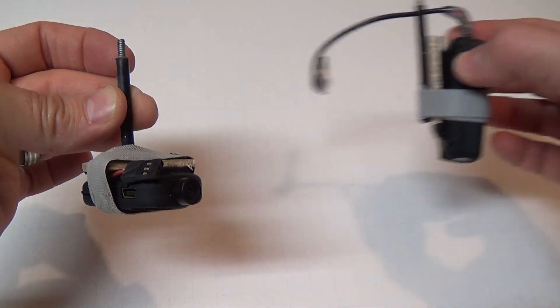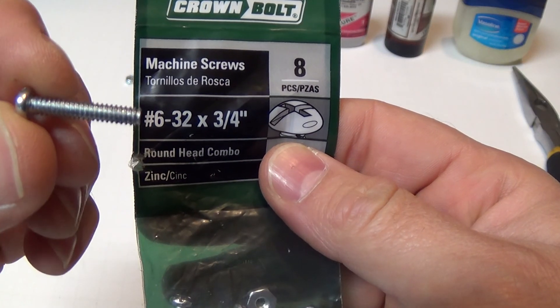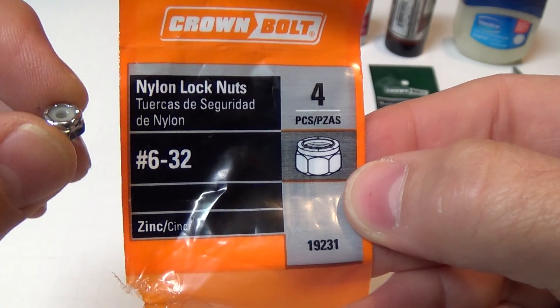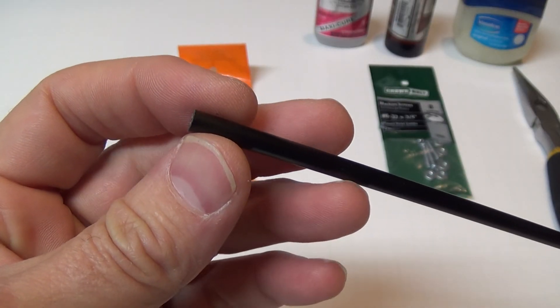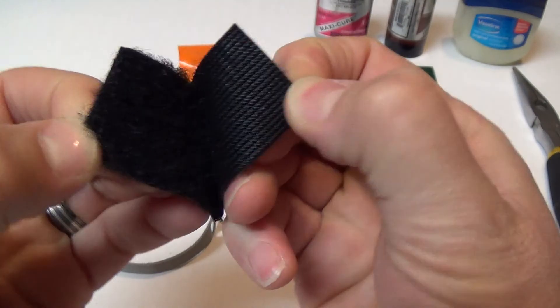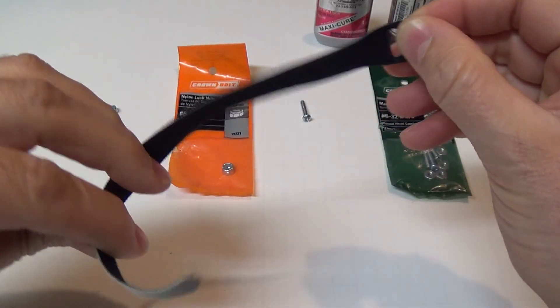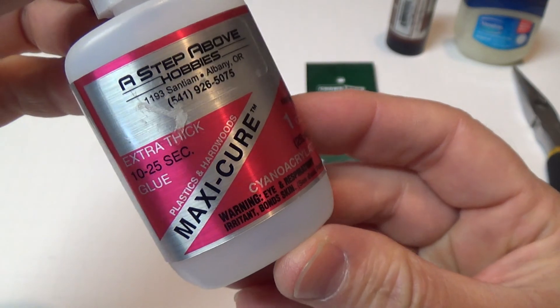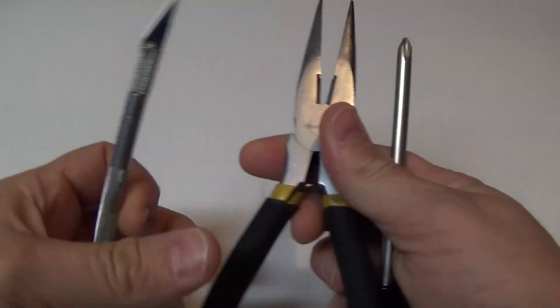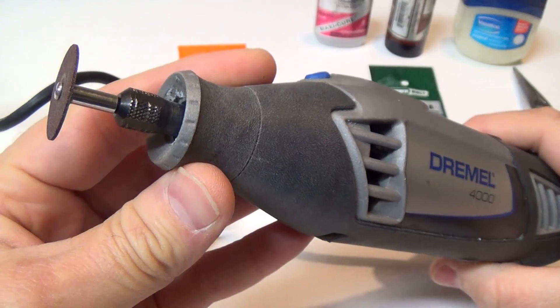To make a camera mount all you need is a number six bolt at least three-quarters of an inch long, a number six nylon lock nut, a short length of carbon fiber tubing, some scrap balsa, a small patch of velcro, a velcro strap, some medium or thick superglue, accelerator, some Vaseline, a few typical hobby tools, and a Dremel tool.